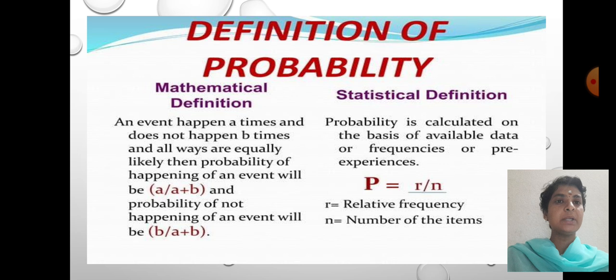The definition of probability: an event happening a times and does not happen b times, and all ways are equally likely, then probability of happening of an event will be a/(a+b) and probability of not happening of an event will be b/(a+b). Statistical definition of probability is calculated on the basis of available data or frequencies or prior experiences. P = r/n or relative frequency, where n is number of items.